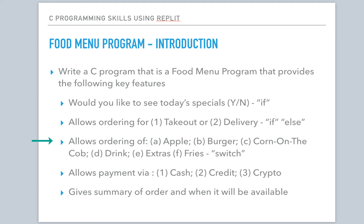Then we will allow the ordering. So you can order — just for simplicity, we'll just have a few items. You can order an apple, a burger, corn on the cob, a drink, extras, and fries. And we're going to use a structure called a switch to do this.